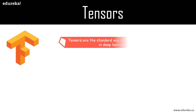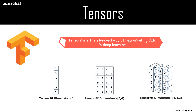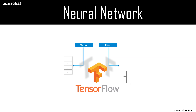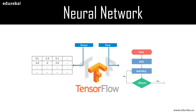TensorFlow's name is directly derived from its core framework. In TensorFlow, all computation involves tensors — a tensor is a vector or matrix of n dimensions that represents all data types. All operations are conducted inside a graph, which is a set of computations that take place sequentially. Each operation is called an op node and they are connected to each other. TensorFlow allows developers to create data flow graphs — structures that describe how data moves through a graph or series of processing nodes, where each node represents a mathematical operation and each connection or edge is a multi-dimensional data array, or tensor.